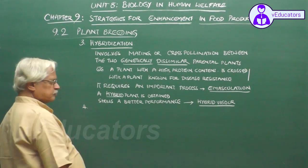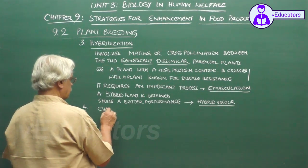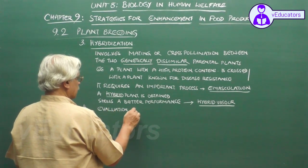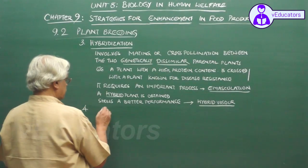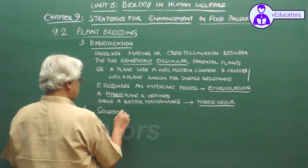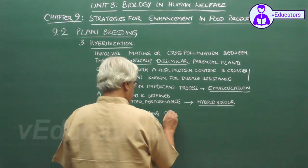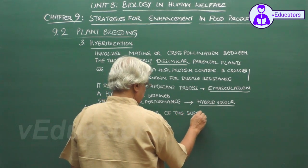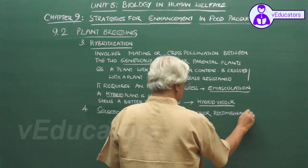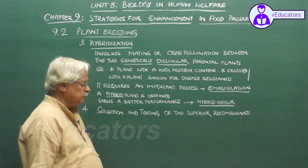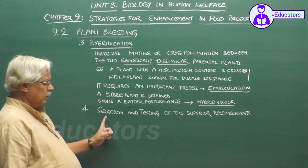The next step is selection and testing of the superior recombinants. The hybrid plants obtained by cross-pollination are selected and tested.